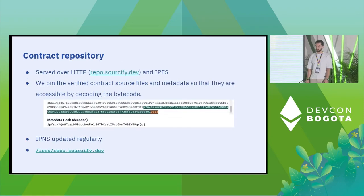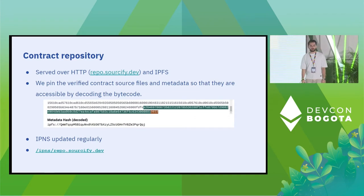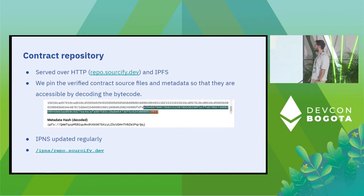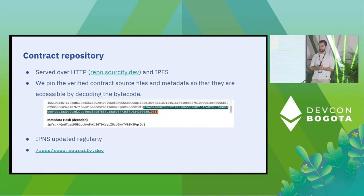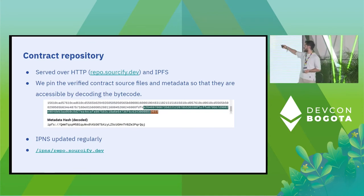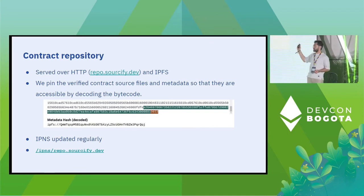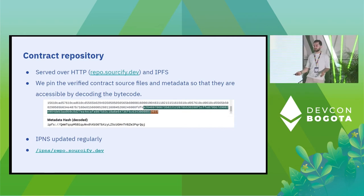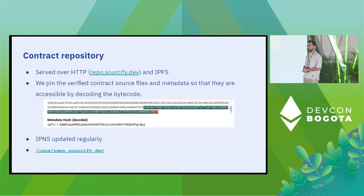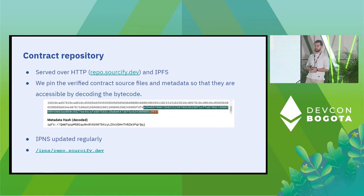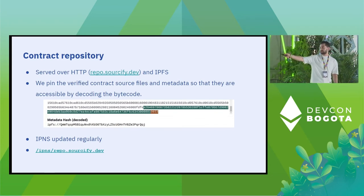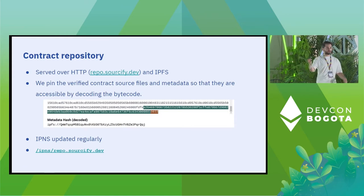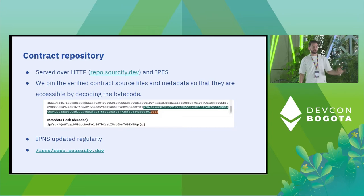We have a contract repo of all verified contracts served over HTTP and IPFS under repo.sourcify.dev. We pin the verified contract source files and metadata so they are accessible by decoding the bytecode. Anyone can access them by their IPFS hash, and there are other people pinning our repo as well. We also serve the repo under an IPNS name, so you can see the contract repo, access all the files, and download the whole repo.